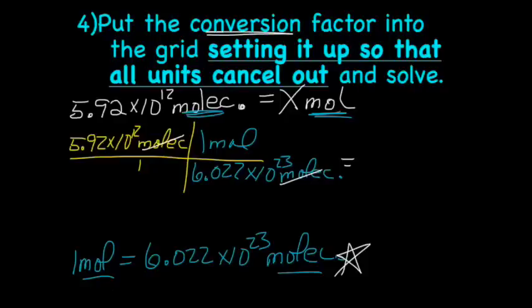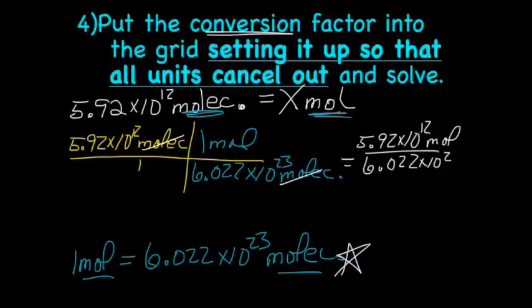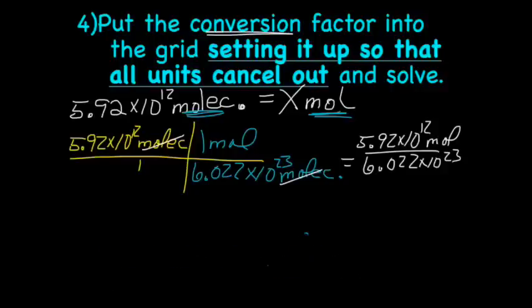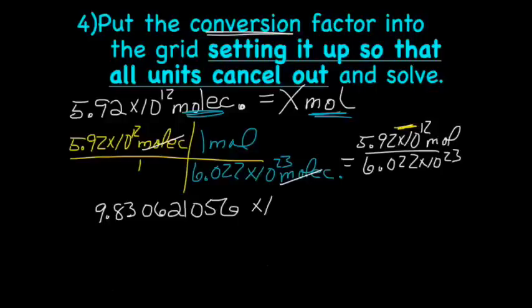And then to solve, we multiply across the top. So, 5.92 times 10 to the 12th times 1 mole is going to give us 5.92 times 10 to the 12th mole over 6.022 times 10 to the 23rd. Let's get rid of this so we have a little bit more room to work. All right, so now we're going to stick this number in our calculators, putting the 5.92 times 10 to the 12th in the calculator first. And remember that times 10 there does not mean multiply by 10, right? You should not be hitting the multiplication button at that point. That's going to be your exponent or EE button. So if you guys could put it in your calculators and make sure that you can get the same answer as me. I got 9.830621056 times 10 to the negative 12th.